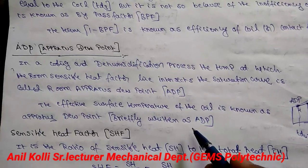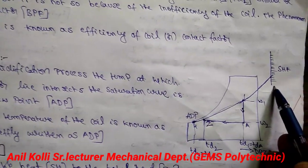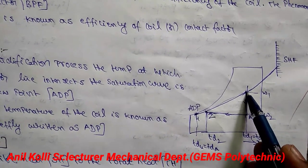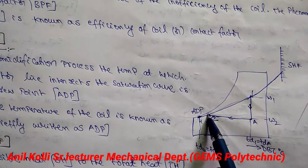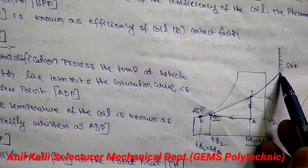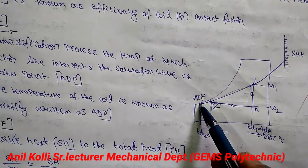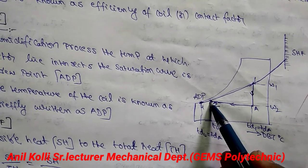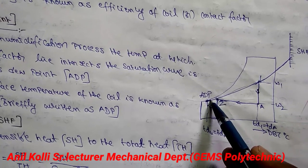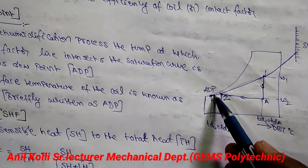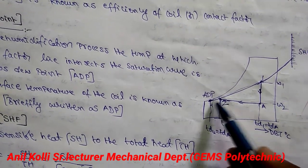In the cooling and dehumidification process, let us look at the psychrometric chart. Suppose process 1 to A is a dehumidification process and A to 2 is a cooling process. The sensible heat factor line, if extended to the saturation curve — though practically not possible due to coil inefficiency — where this line intersects the saturation curve gives us the ADP, i.e., the apparatus dew point.